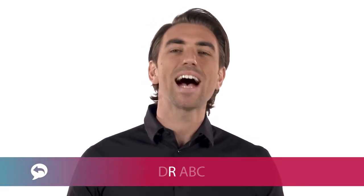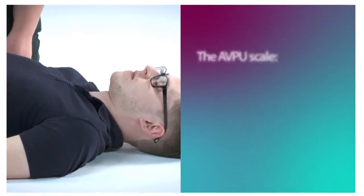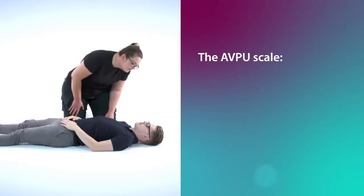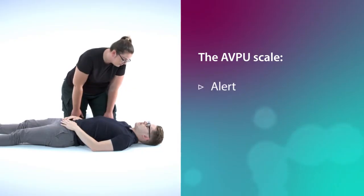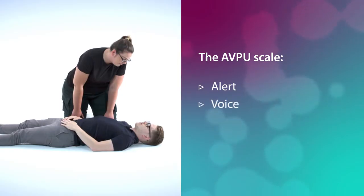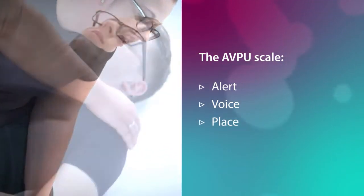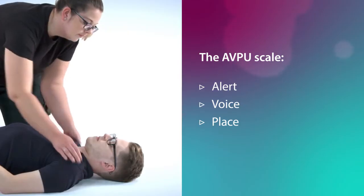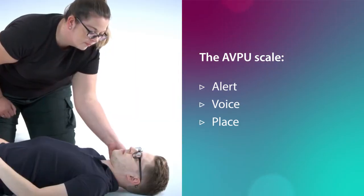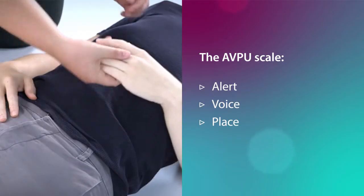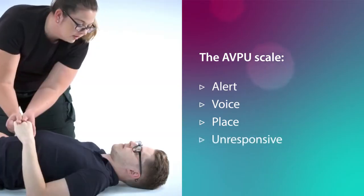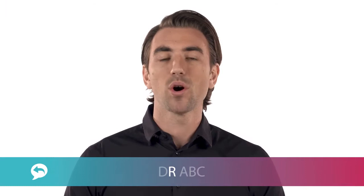Response. Having checked for danger, you now need to see how responsive the casualty is. Use the AVPU scale to help. Begin by seeing if they're alert — are they moving or talking? If not, do they respond to your voice? Talk to them and ask if they're okay. If they don't respond, place your hand on their shoulder and gently shake them. For children and infants, instead of shaking them, just tap their shoulder or their foot. If they still don't respond, assume that they are unresponsive and move on to the next step of Dr. ABC.